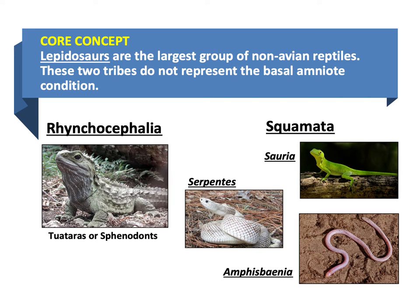The Rhynchocephalids, which are the sphenodonts or the tuataras — a group of special reptiles that once were quite abundant around Gondwanaland but are now pretty much restricted to New Zealand. And then what we're more familiar with: the squamates.